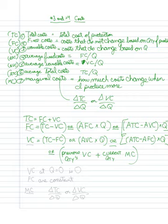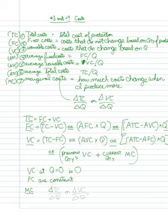Once you know one fixed cost, you know them all. The variable cost at quantity zero is zero. Fixed costs are constant across all quantities. Marginal costs are either your change in total cost over your change in quantity, or your change in variable cost over your change in quantity. The averages — AFC, AVC, and ATC — are calculated by dividing by the quantity as it gets larger.